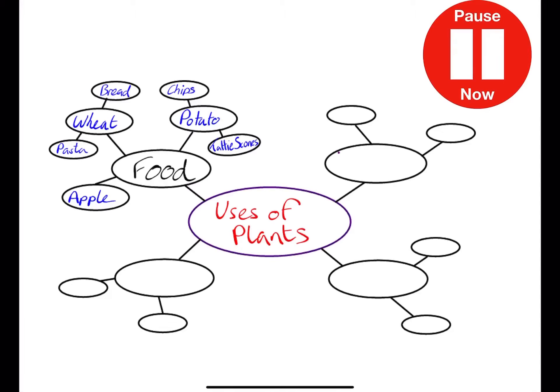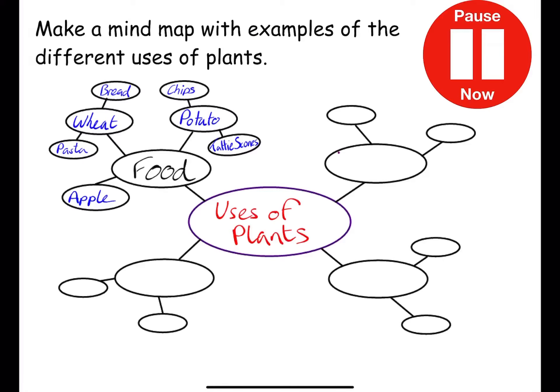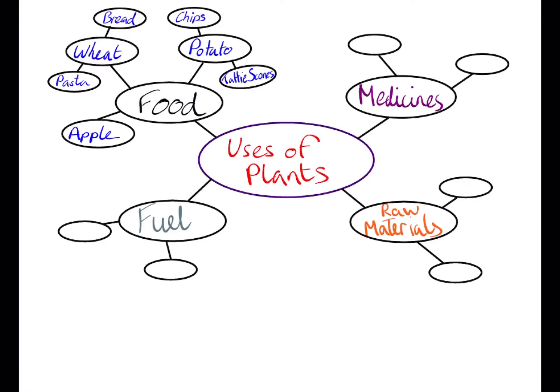First of all, let's think back to uses of plants. Pause the video now and sketch out a mind map, completing the empty bubbles for some uses of plants other than food. The three main uses of plants that are not food are for medicines, raw materials and fuel.